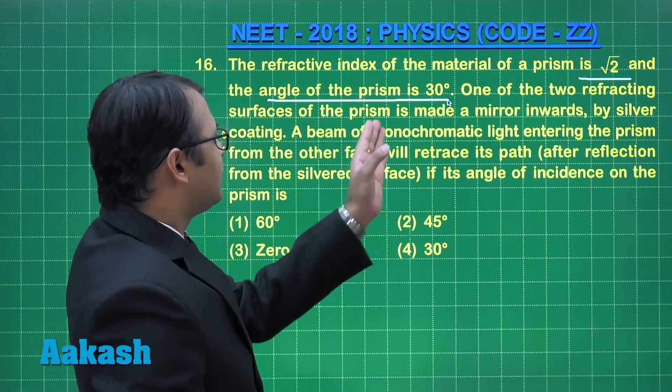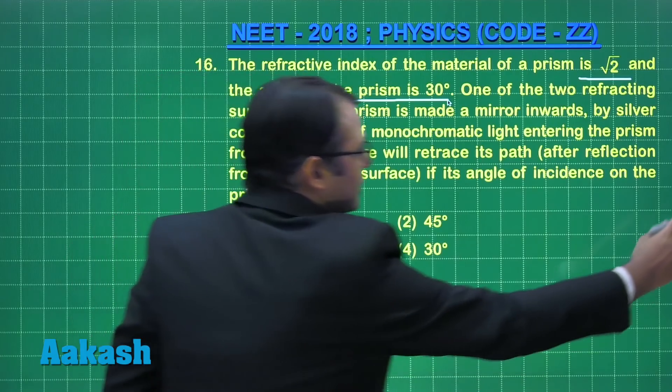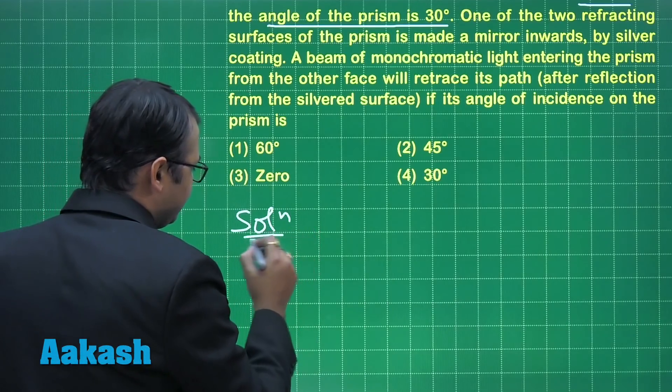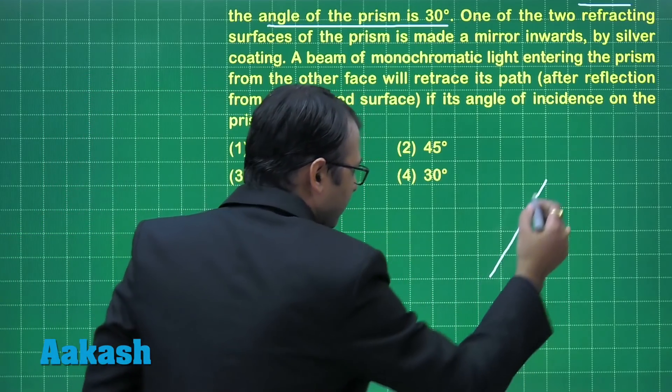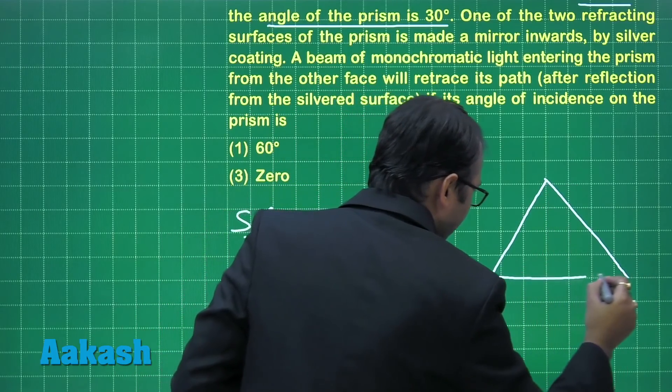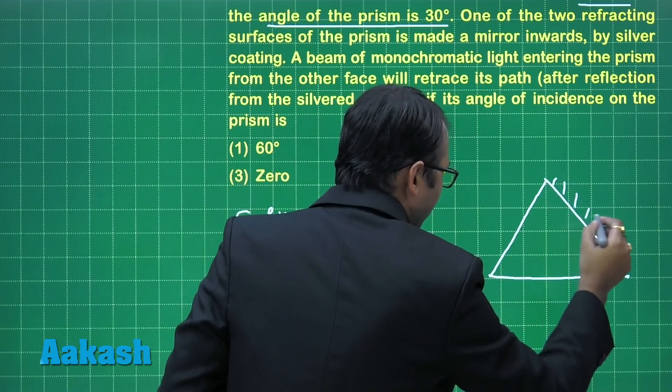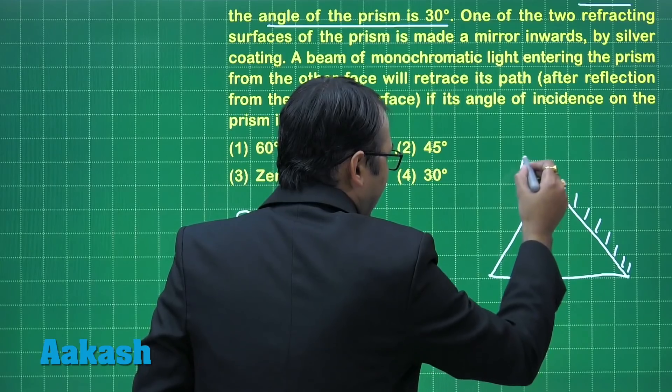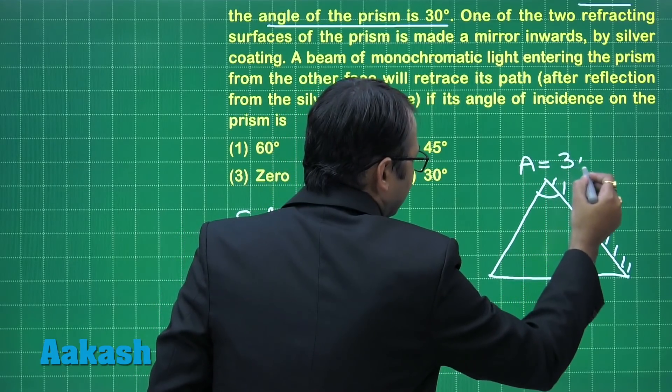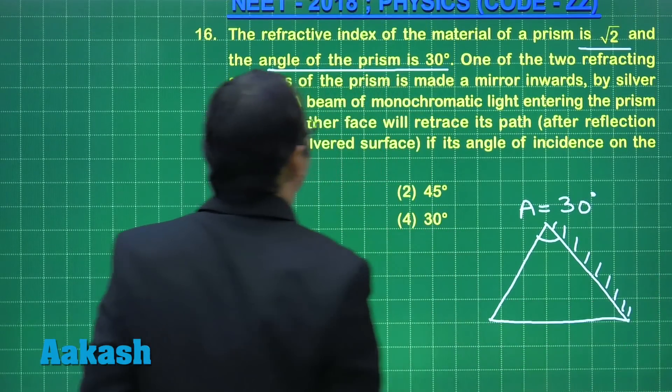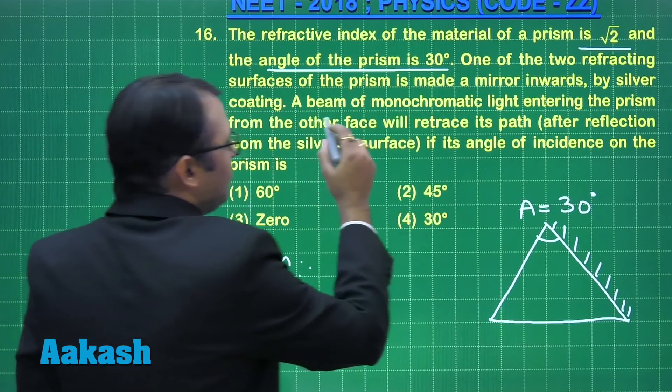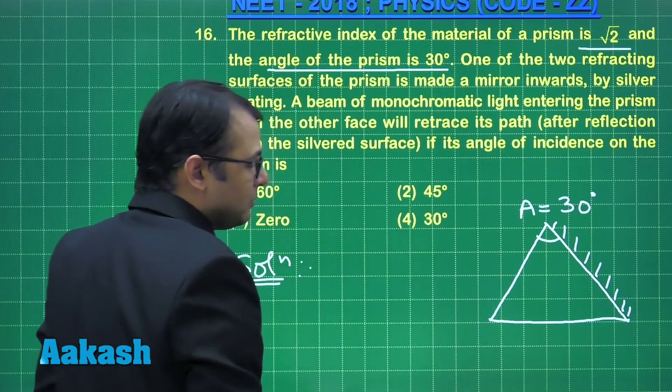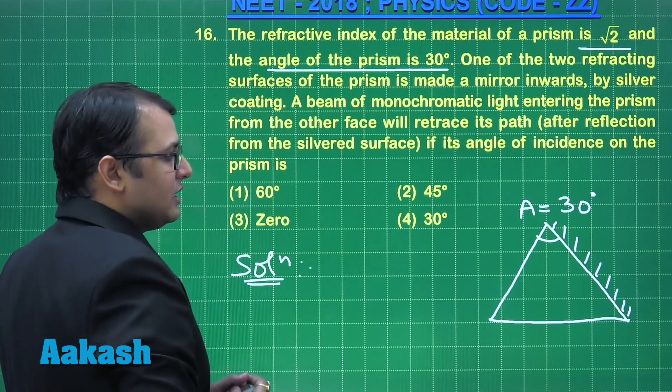One of the two refracting surfaces of the prism is made a mirror inwards. It means that one surface of the prism has been silvered by polishing. Let's draw the diagram. This is how it has been polished. This angle is angle A, which is given as 30 degrees.